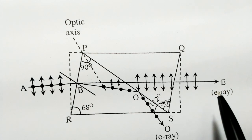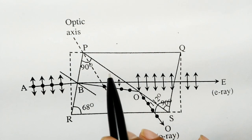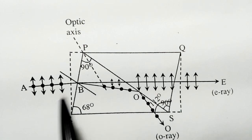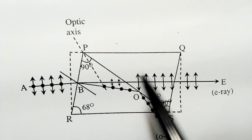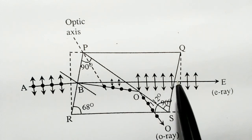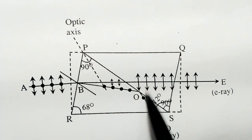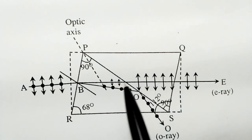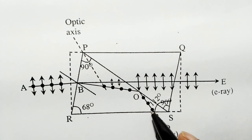Nicol's Prism is based on the phenomenon of double refraction. It was made from a calcite crystal. For the construction, we consider a calcite crystal of length three times its width. The end faces are ground so that the angles are 68 degrees and 112 degrees.